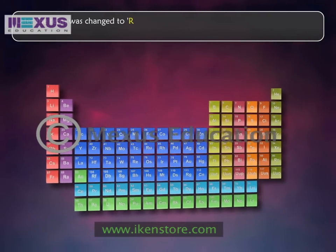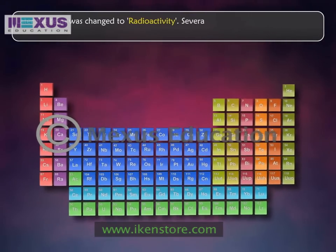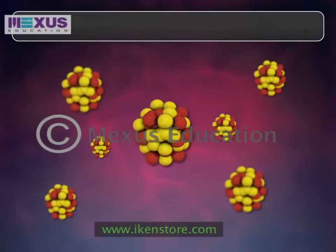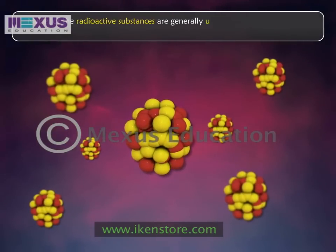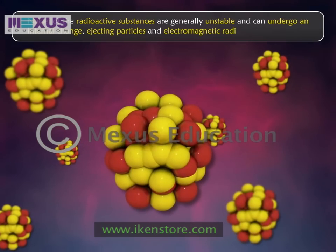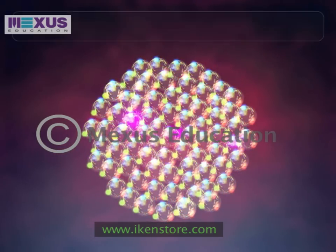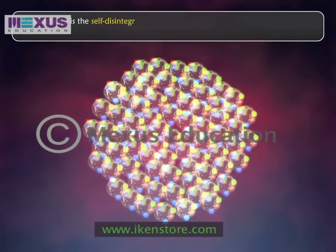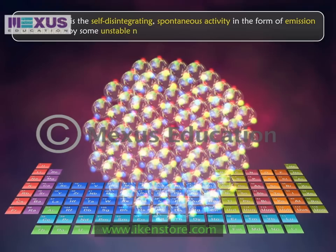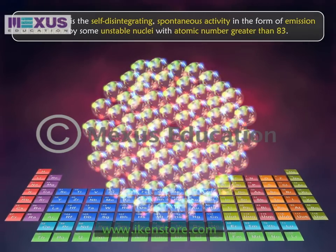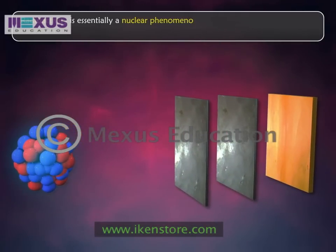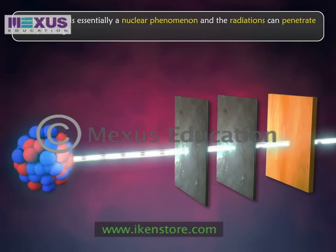Later, the term was changed to radioactivity. Several substances with atomic number greater than 83 give out such radiations. Nuclei of radioactive substances are generally unstable and can undergo an internal change, ejecting particles and electromagnetic radiations. Thus, we can define radioactivity as the self-disintegrating, spontaneous activity in the form of emission of radiations by some unstable nuclei with atomic number greater than 83. Radioactivity is essentially a nuclear phenomenon and the radiations can penetrate easily through thick substances.